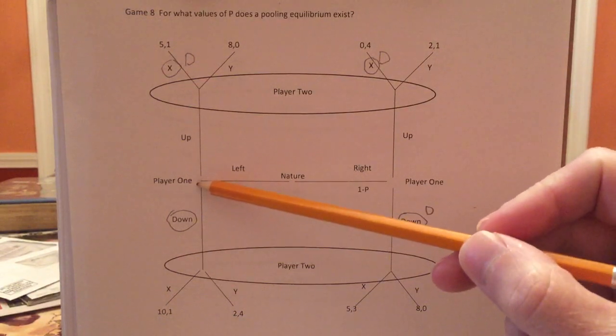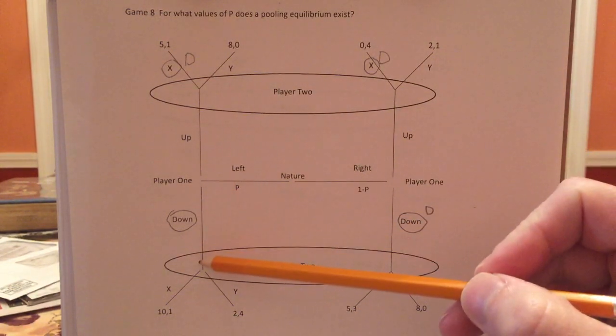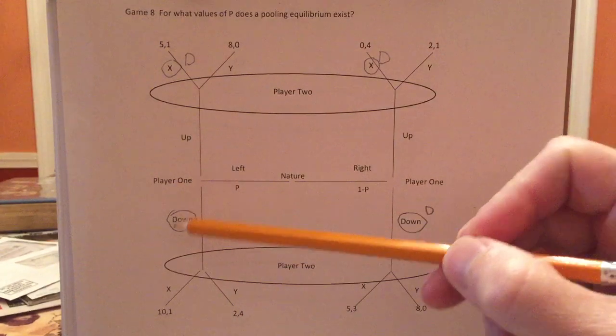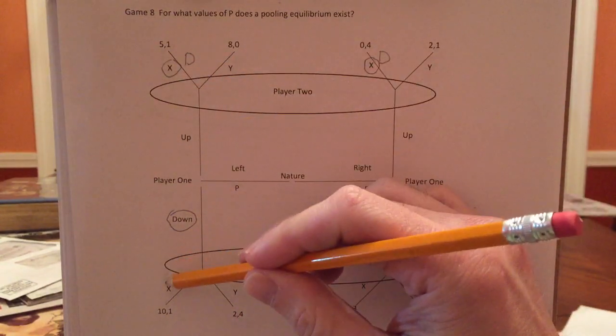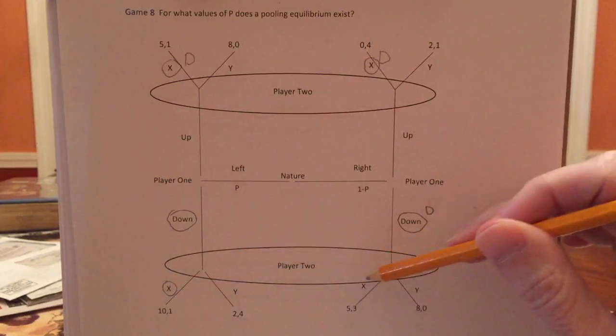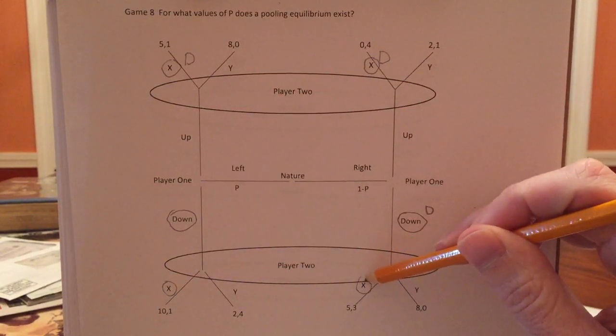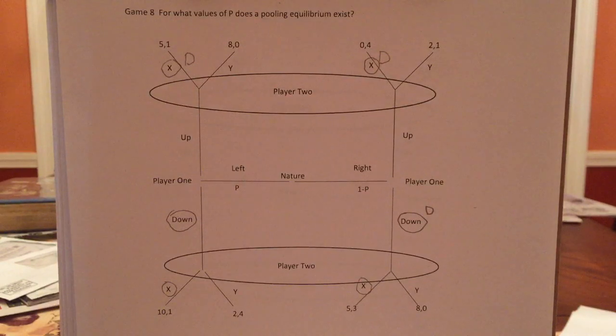There can't be an equilibrium where lefty goes down and he ends up only getting two, because we know if he went up, he would get this five. So if there is indeed a pooling equilibrium, it must be this. OK, let's see.